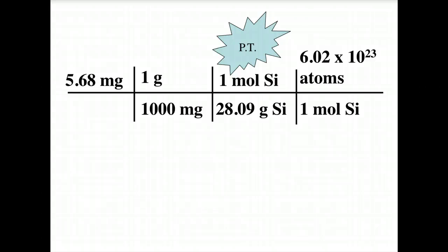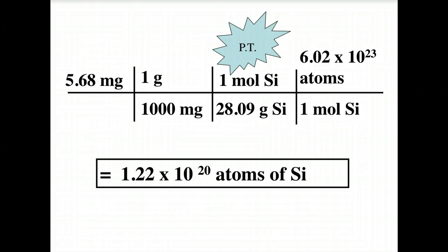Lovely, convenient steps. And, our answer ends up being 1.22 times 10 to the 20th atoms of silicon. Notice, I have three sig figs. I started with three. Everything in the middle is known as our exact numbers or accepted values. So, the beginning number is what limits our sig figs.